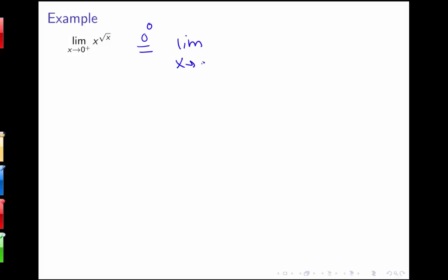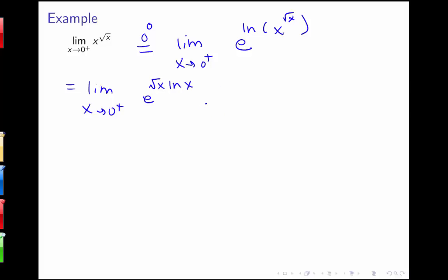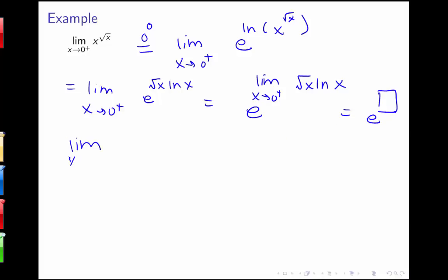To handle this, I use the relationship between e and the natural log. I rewrite x^(√x) as e to the ln(x^(√x)), which equals e to the √x · ln x. Then the limit becomes e to the power of the limit as x goes to 0 from the right of √x · ln x. If I can compute that inner limit, the final answer is e to that power.